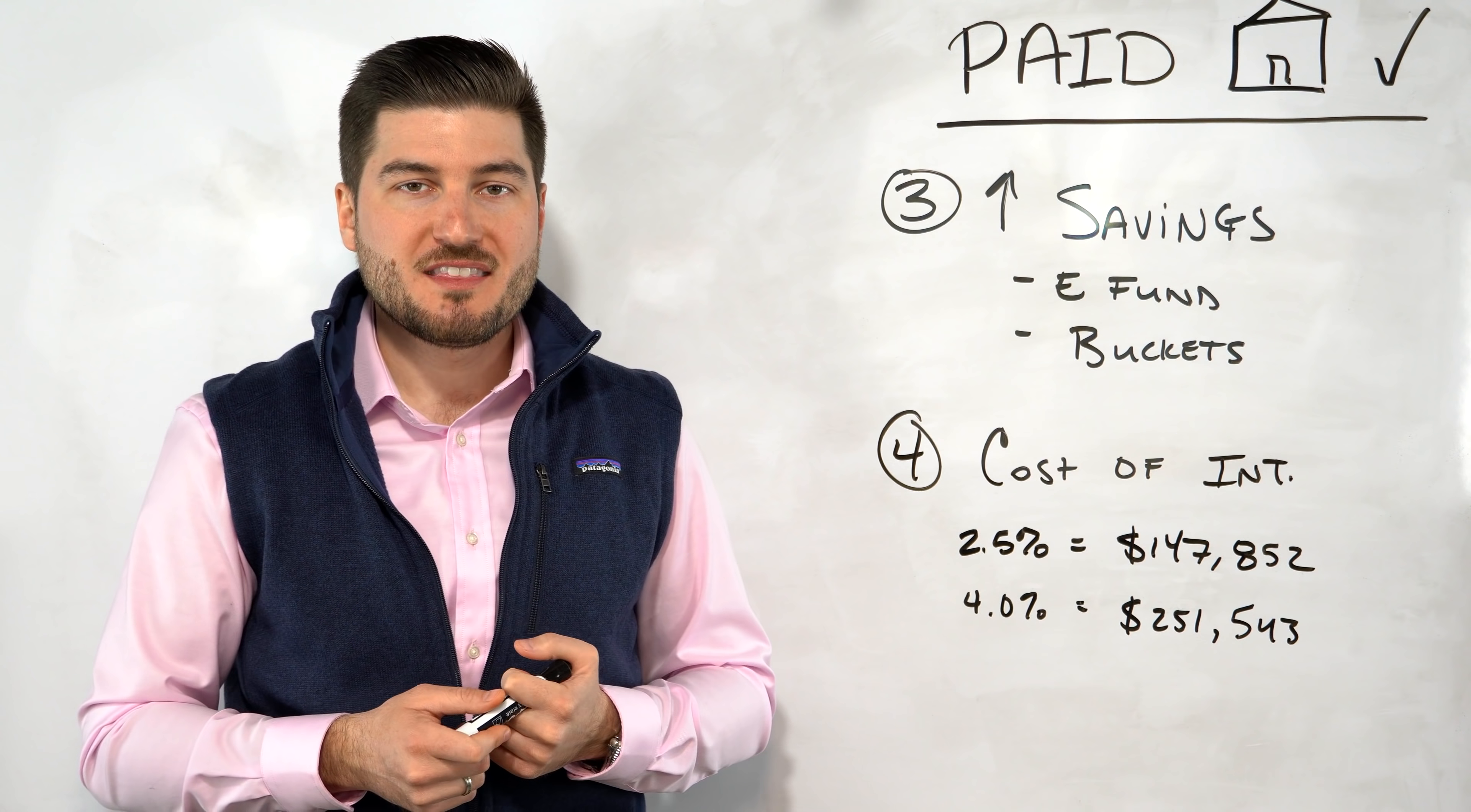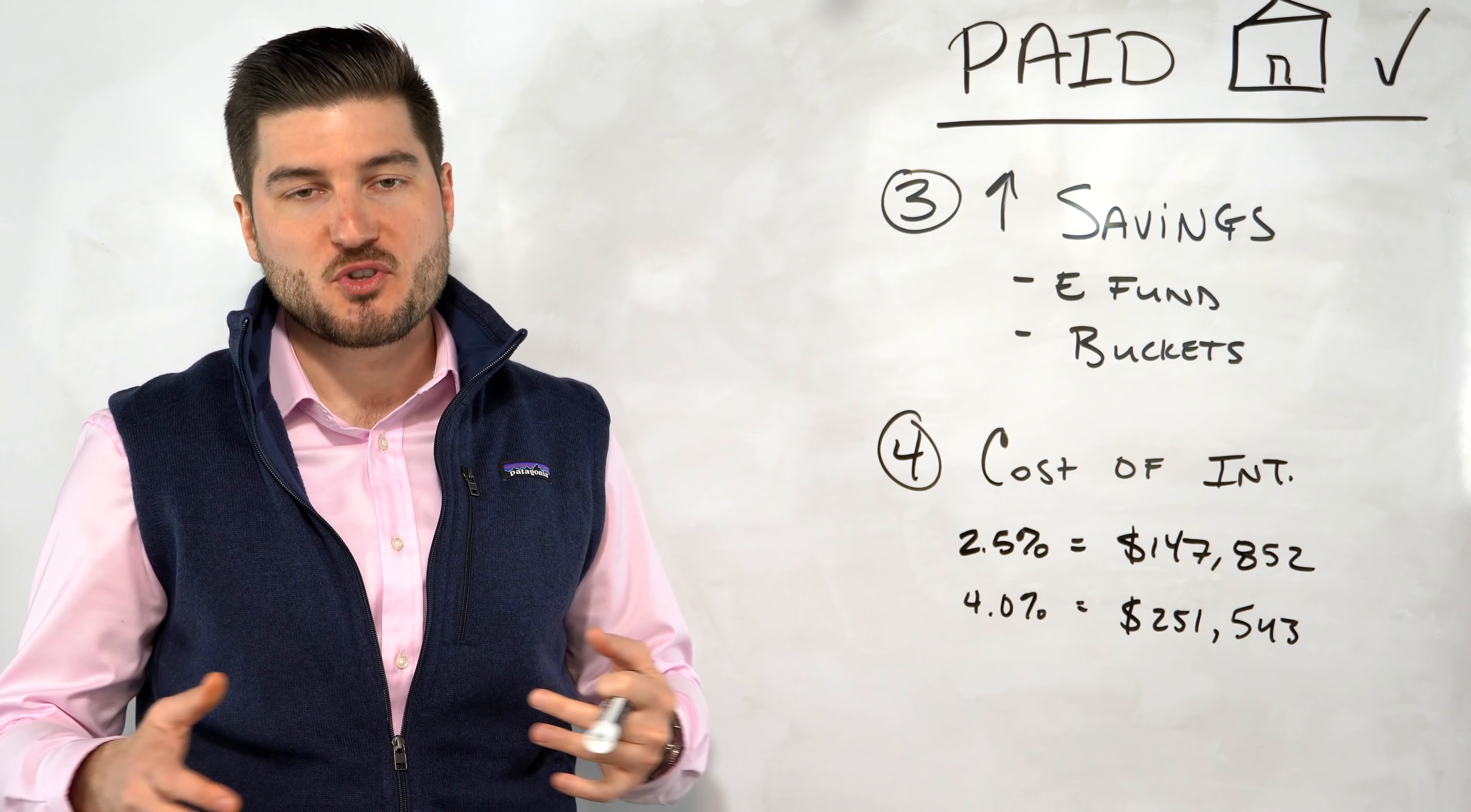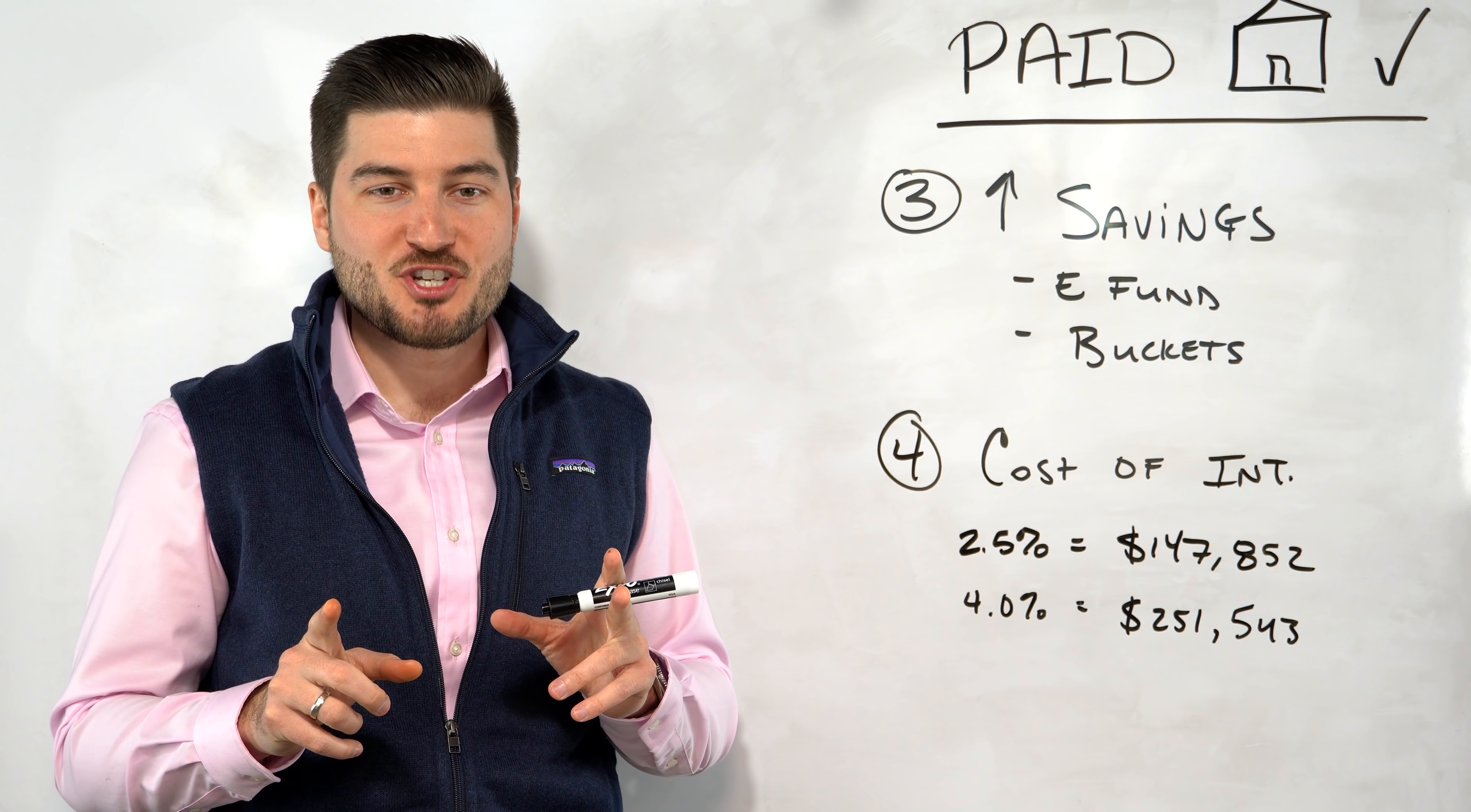And then number four is the cost of interest. So if we took a $350,000 mortgage over 30 years, at two and a half percent interest, you're paying $147,000 over those 30 years. If your mortgage was four percent at $350,000, you're paying $251,000 over those 30 years. So if you just eliminate that mortgage quicker, or if you eliminate it altogether before this 30 years, you're going to be saving the cost of those interest payments, especially if you take a look at an amortization schedule.